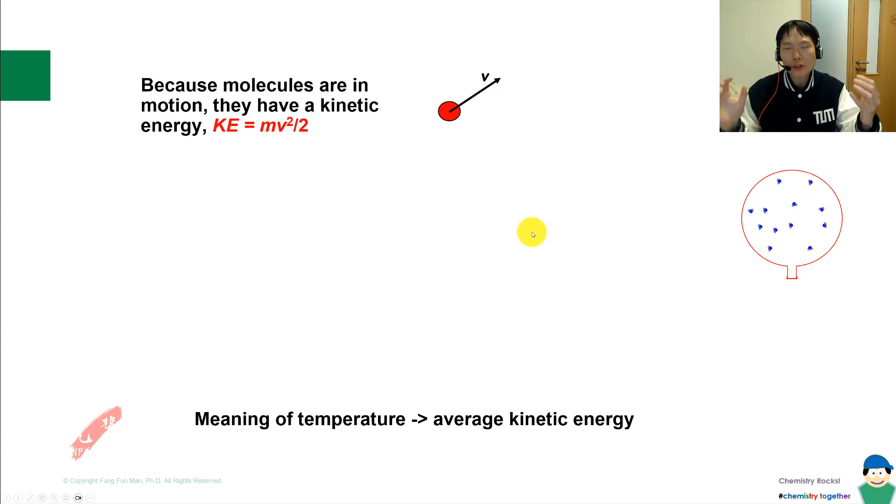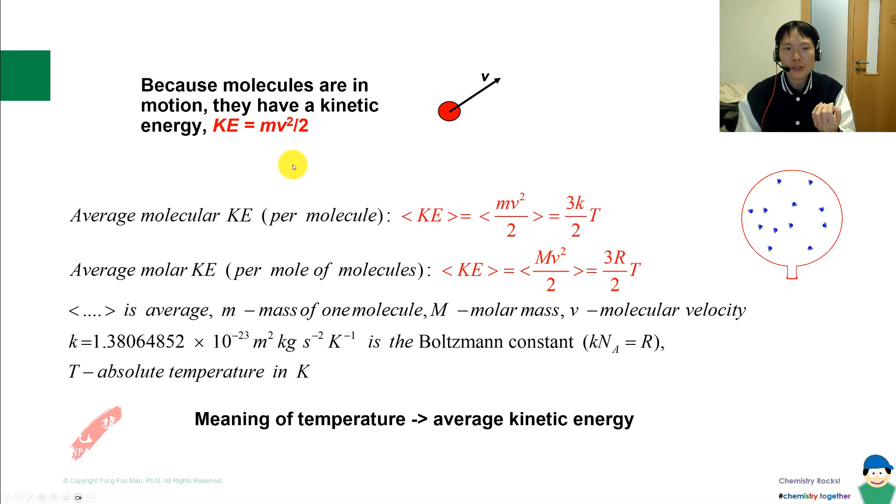Because molecules in gaseous state are always moving, they must have kinetic energy. Here we have a formula that shows KE equals half mv squared, which can be translated to 3kT over 2, where k is your Boltzmann distribution constant and T is your temperature in Kelvin. For average molar kinetic energy, per mole of molecules, you can change it to 3RT over 2.